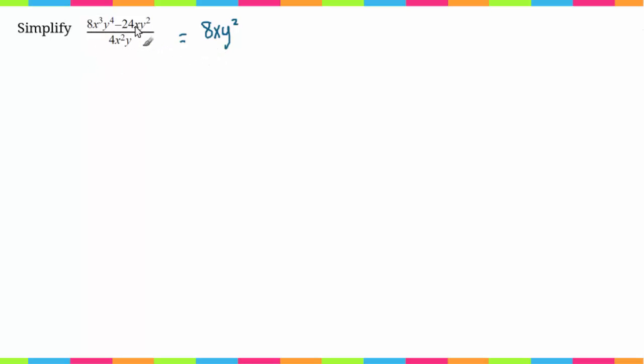Similarly with the x's, I have 1x here and I have 3x here, so actually I can break this down even a little bit further. So this here is equal to 8 times x times x times x times y times y times y minus 24 x y y.